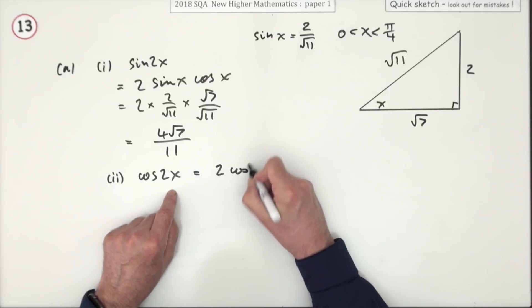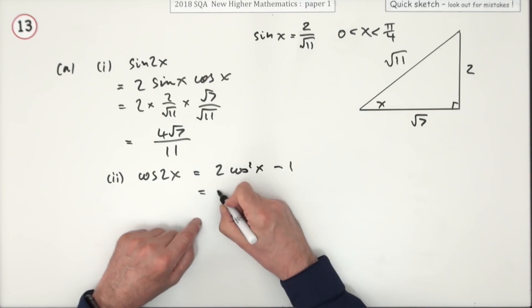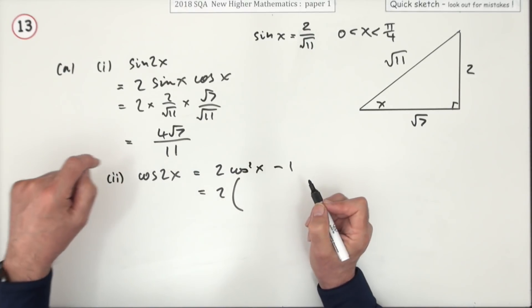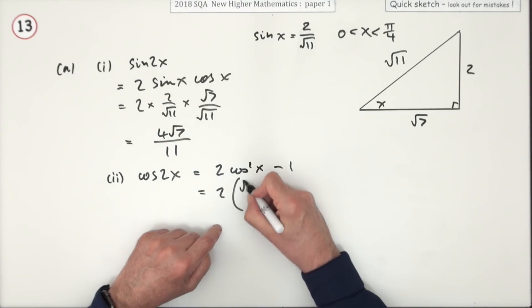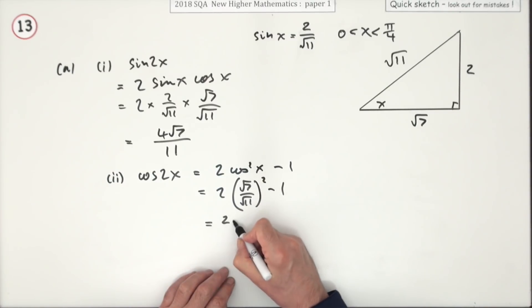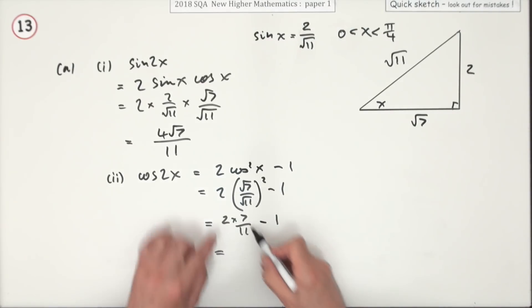We're probably just as well going back to scratch and saying cos 2x can be 2 times cos squared x minus 1. So 2 times the cos of x, which was root 7 over root 11, very handy for squaring, minus 1.